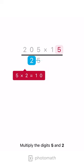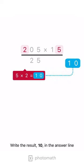Multiply the digits 5 and 2. Write the result, 10, in the answer line.